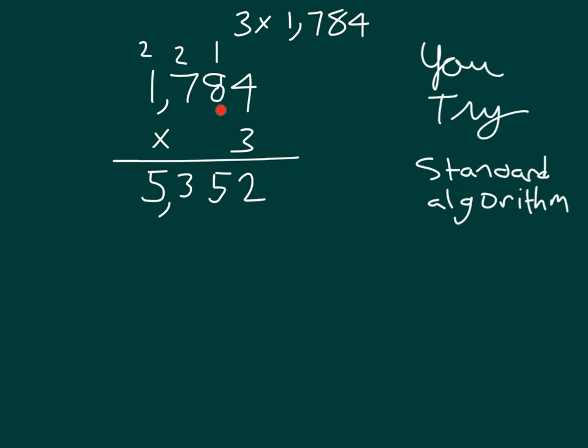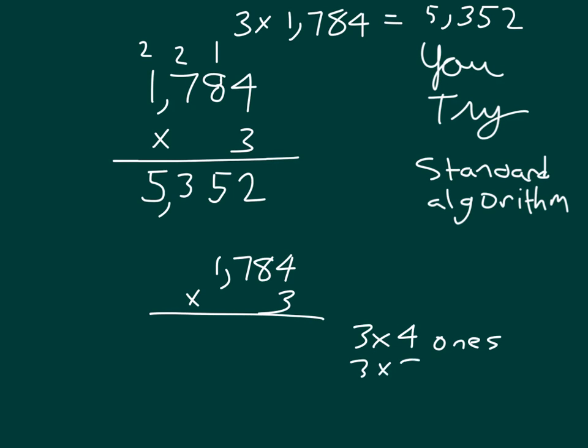So 1,784 times 3 gives us 5,352, or even if I have this multiplication problem up here, 3 times 1,784 gives us 5,352. Give yourself a pat on the back if you got that correct. Again, this is different than our partial products approach. However, many of those steps actually do appear within that standard algorithm. We had 3 times 4 ones and 3 times 8 tens and 3 times 700s, and of course, 3 times 1,000.